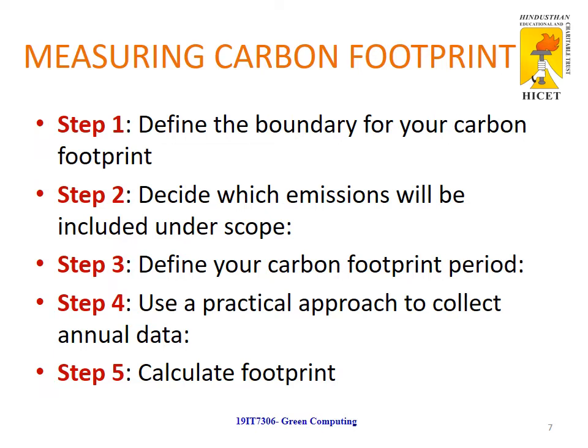Scope 1 emission includes all the direct emissions from assets, such as emissions from vehicles or any other on-site activity. Scope 2 emission includes all the indirect emissions, such as emissions from electricity. Scope 3 emission covers all other indirect emissions like waste, supply chain emissions, water, and others.